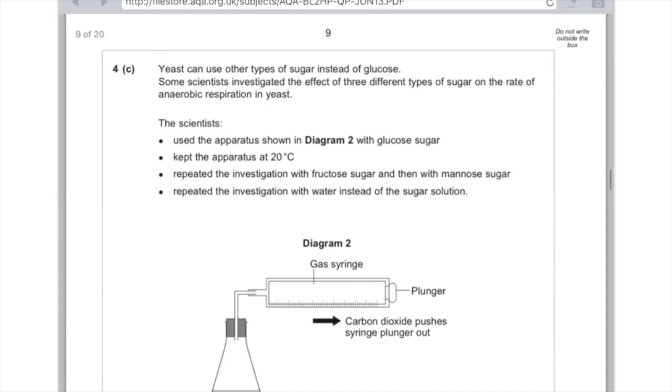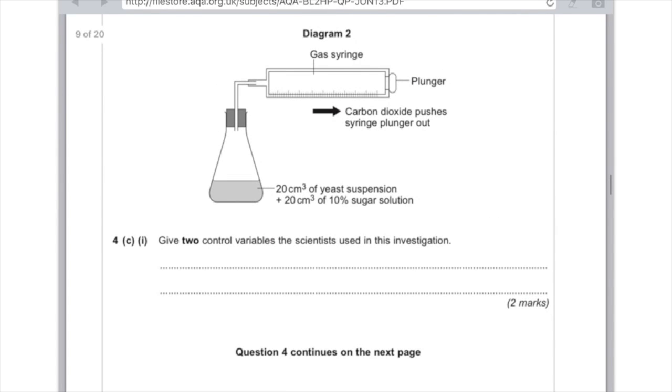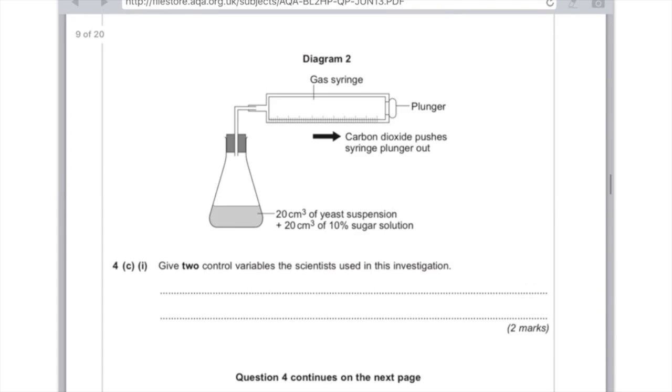4C. Yeast can also use other types of sugar instead of glucose. Some scientists investigated the effect of three different types of sugar on the rate of anaerobic respiration in yeast. The scientists used the apparatus shown in diagram 2 with glucose sugar, kept the apparatus at 20 degrees and repeated the investigation with fructose sugar and then with mannose sugar, repeated the investigation with water instead of the sugar solution. Give two control variables the scientists used in this investigation. So what do they need to keep the same in order to make sure it's a fair test? First of all, you could state that they need to use the same volume of yeast, the same volume of sugar, maybe the same concentration of sugar and then the obvious one here is temperature.